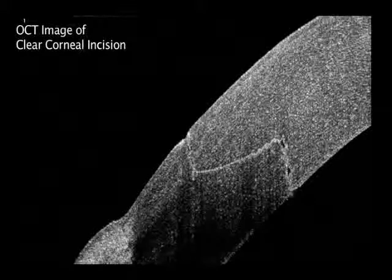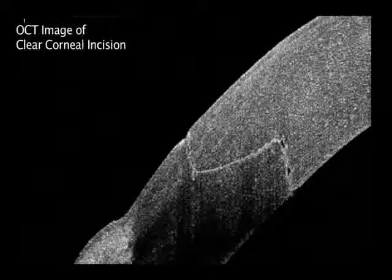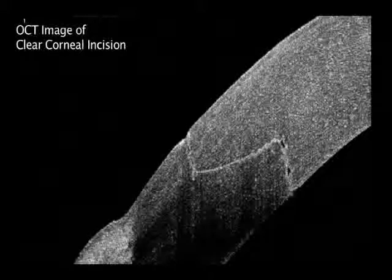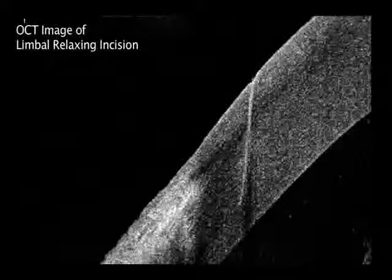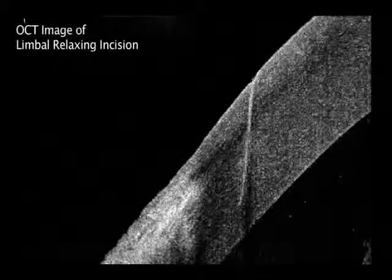The architecture of the incisions can be seen using OCT. In this first image, a 3-plane incision has been cut in the cornea. In the second, a limbal relaxing incision cut to a 90% depth is shown.